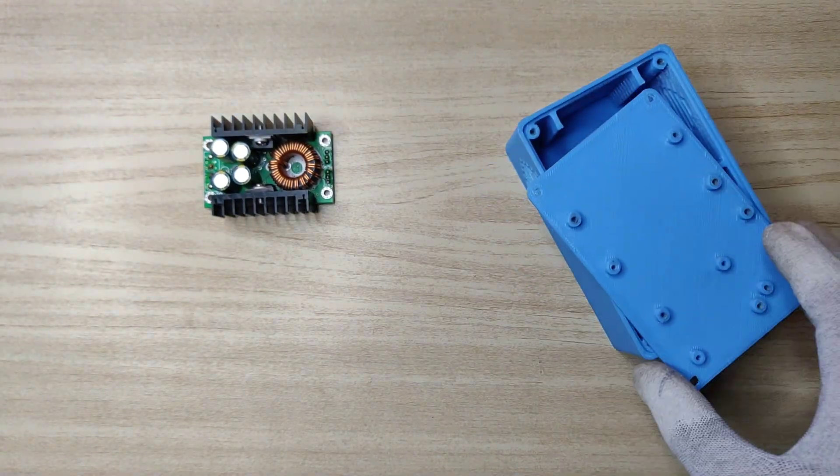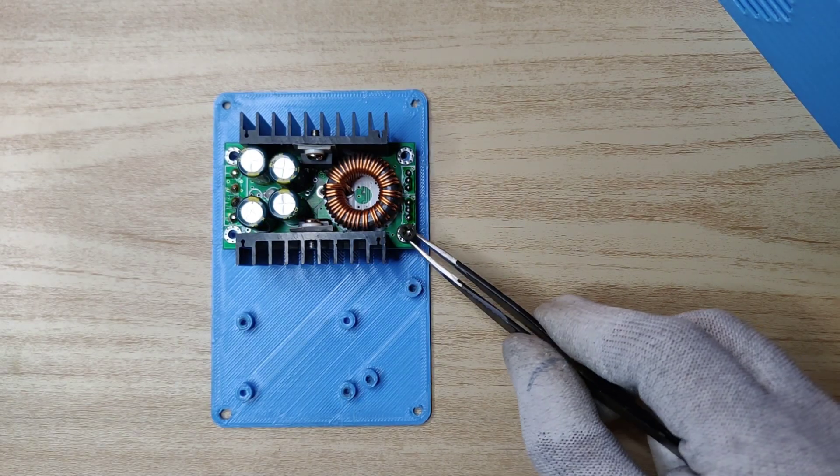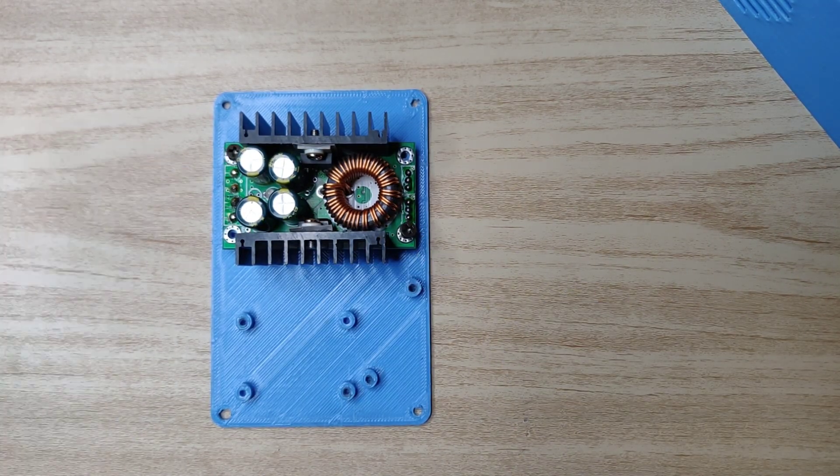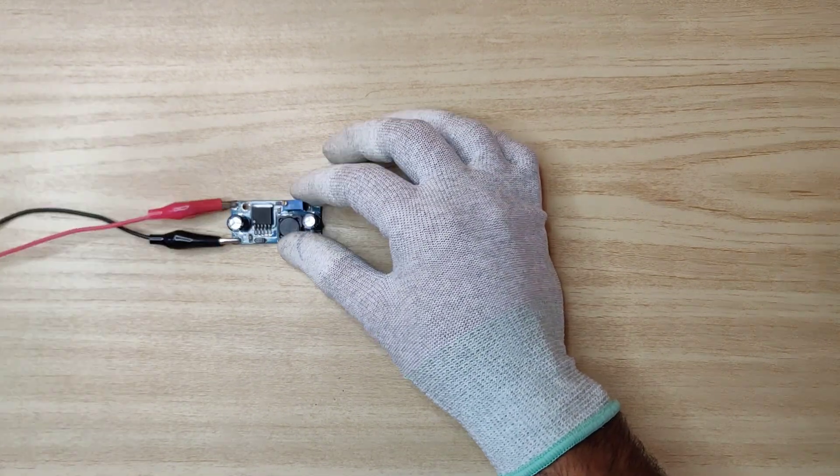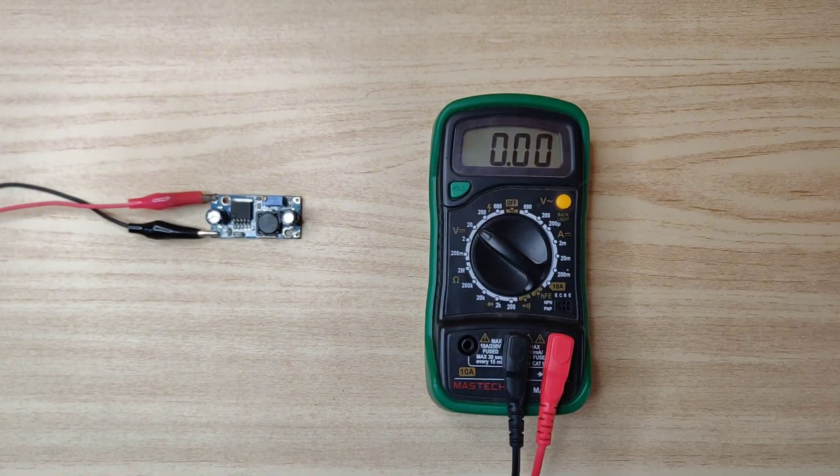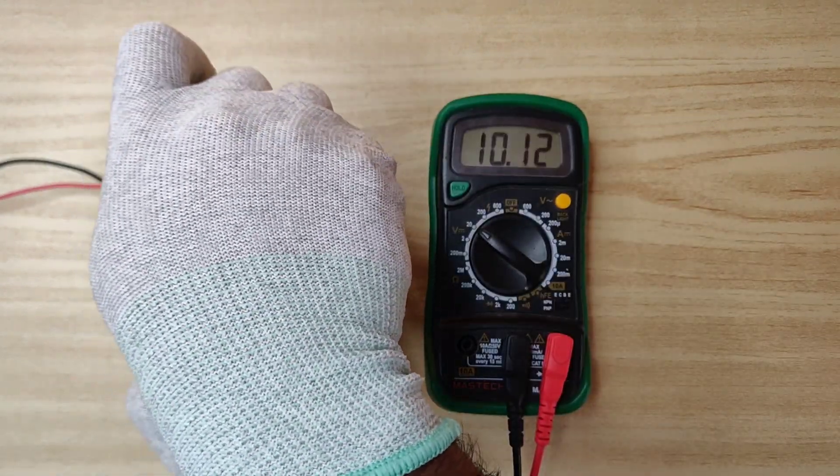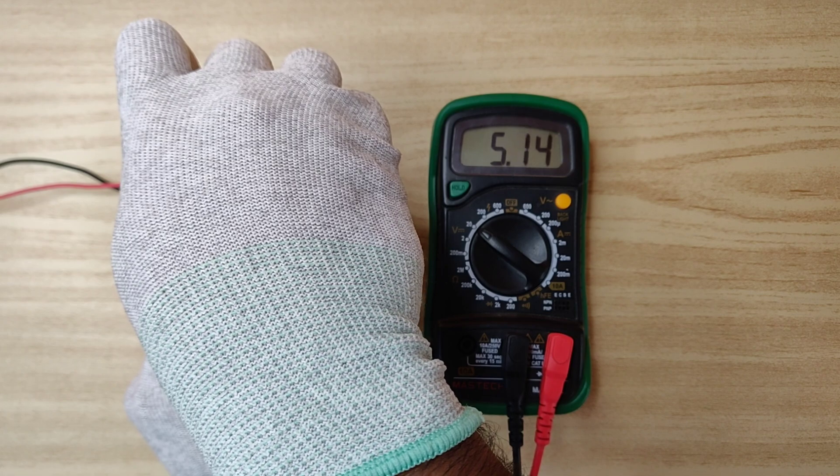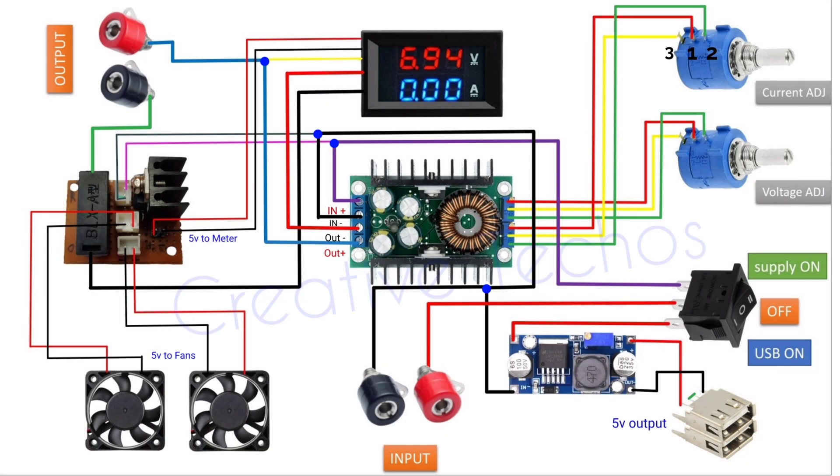Now take the enclosure back part and mount this module using M3 5mm screws. Now take this LM2596 module and connect DC 30V on input and connect multimeter on output. Use screwdriver to adjust output voltage at 5V. Connect everything according to the circuit diagram. Download link is in video description.